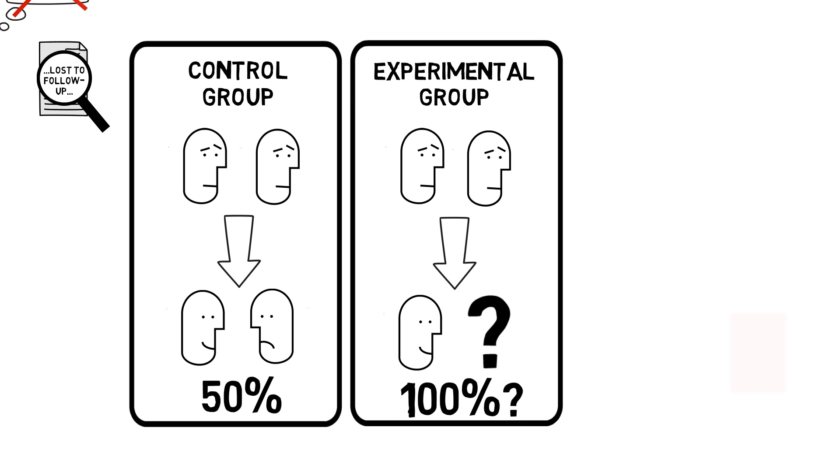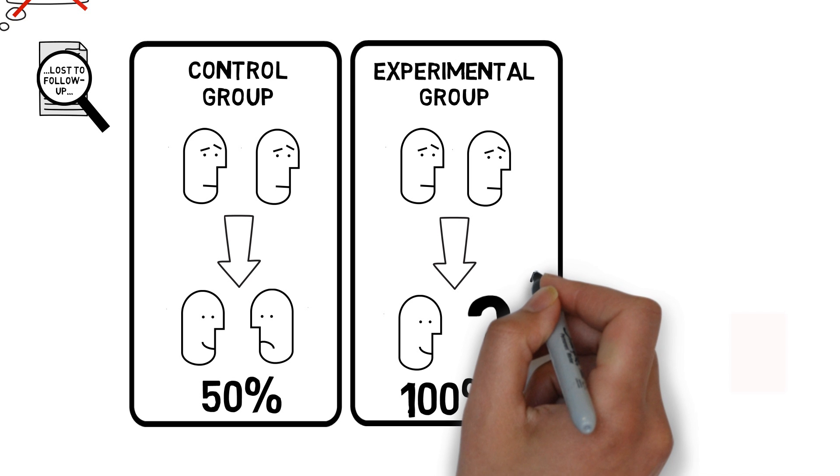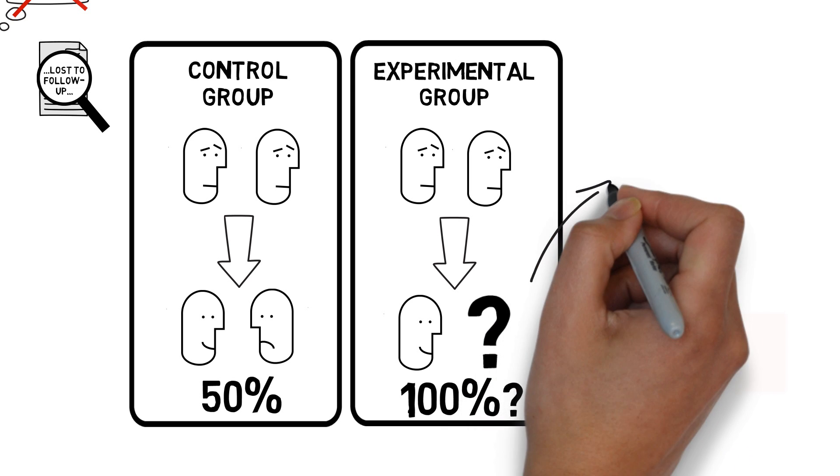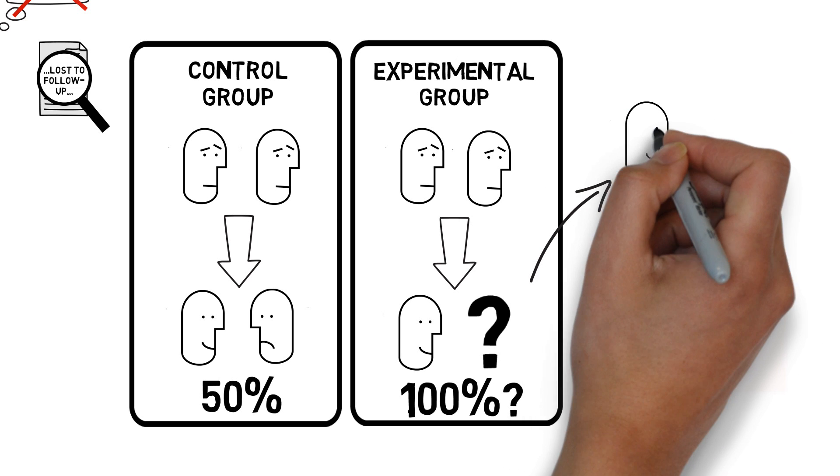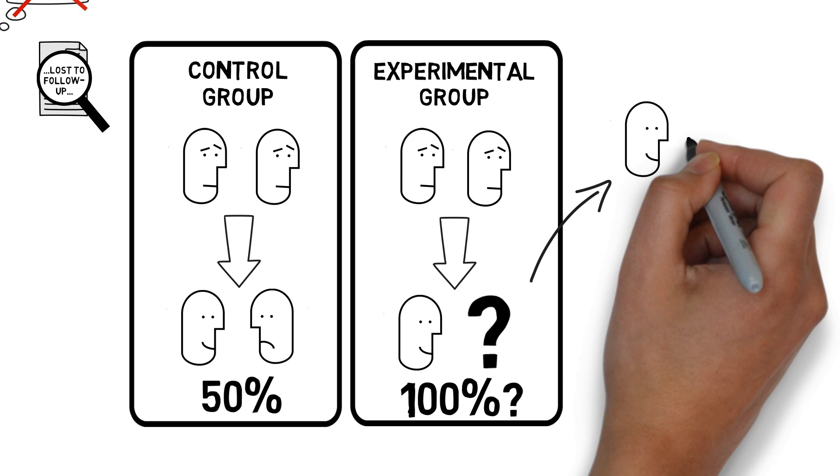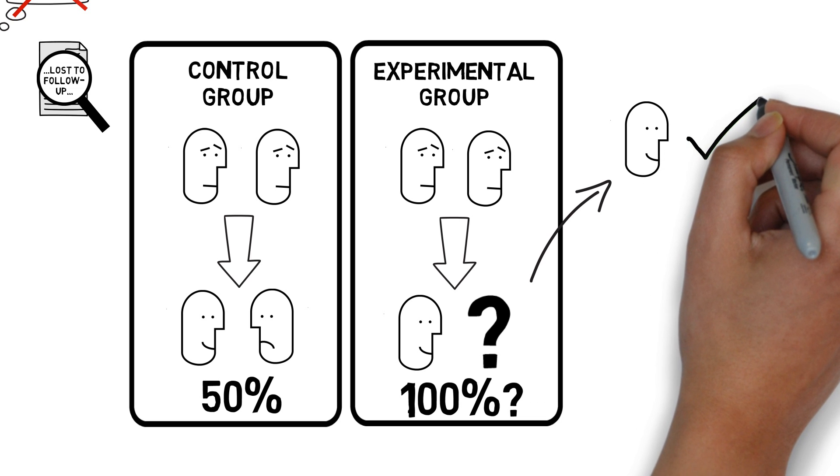Let's imagine what might have happened to this participant, and how that might affect the study's results. First off, the missing participant might have had the good outcome, which would have given the experimental group 2 out of 2 with a good outcome, or 100%, making it better than the control group.